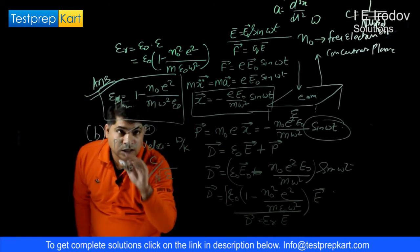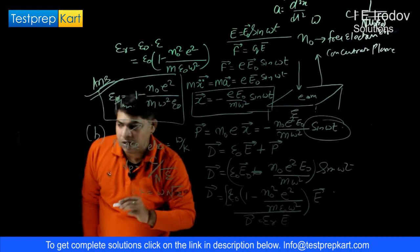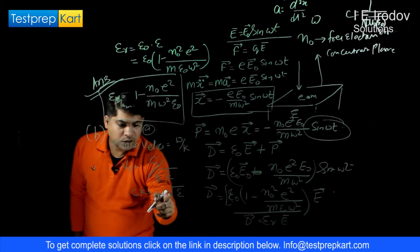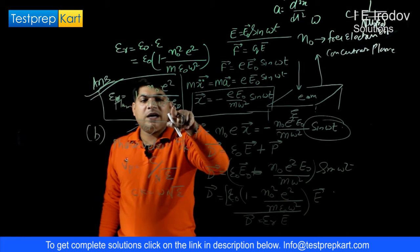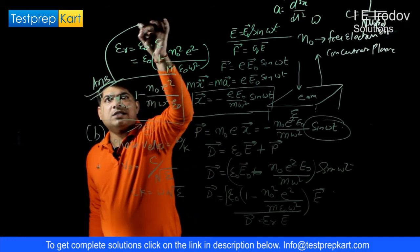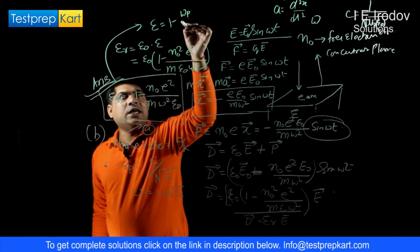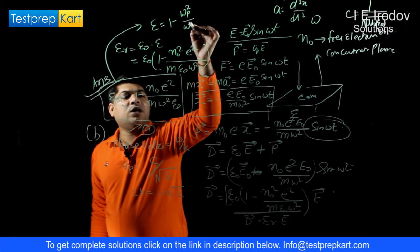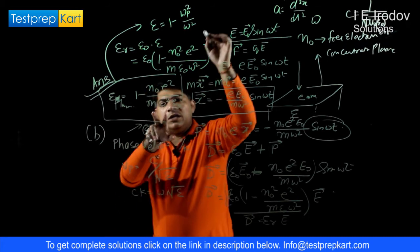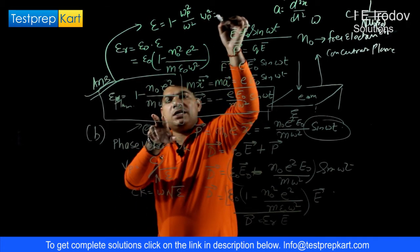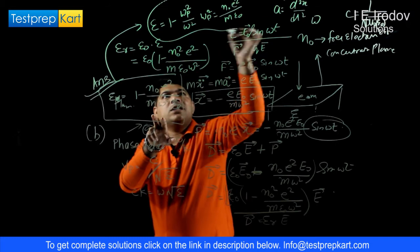From equating these two equations, ck = omega sqrt(epsilon). We already know epsilon = 1 - N0 e² / (m omega² epsilon0). For simplicity, writing epsilon = 1 - omega_p² / omega², where omega_p² = N0 e² / (m epsilon0). So we can write ck = omega sqrt(1 - omega_p² / omega²). Squaring gives: C² k² + omega_p² = omega².